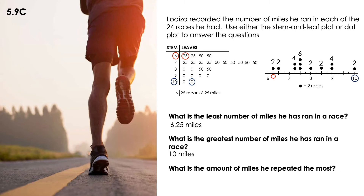What is the amount of miles he repeated the most? If we analyze the stem-and-leaf, we just have to find how many times a value is repeated, so we focus on the leaves side. The number on the leaf side that repeats the most is 50. The value 50 matches with 7 in the stem, giving us 7.50. How many 50s are there? 6. So 7.50 miles is the one repeated most.